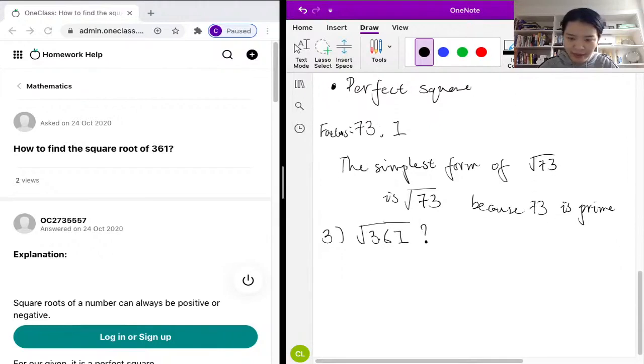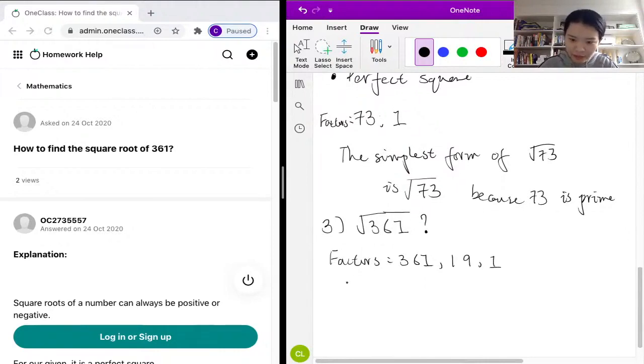We check whether this is a perfect square, and in this case 361 it is a perfect square. Its only prime factor is 19, so we know that the square root of 361 is equal to positive or negative 19.